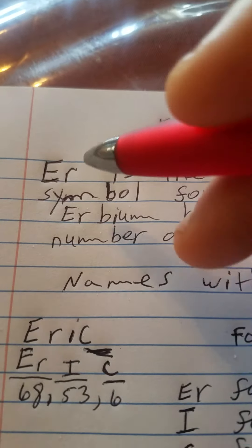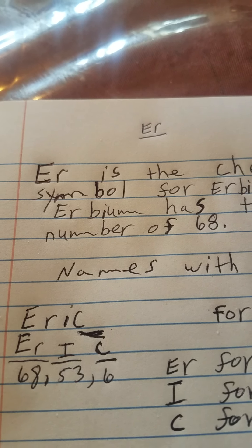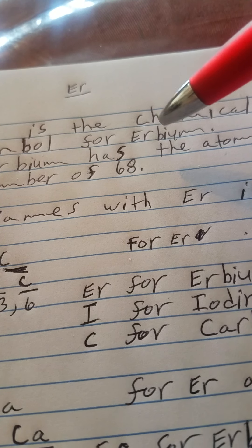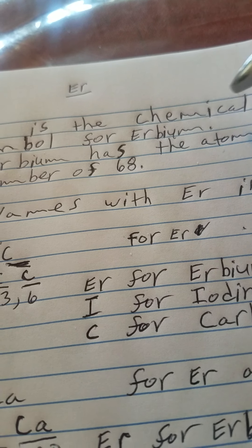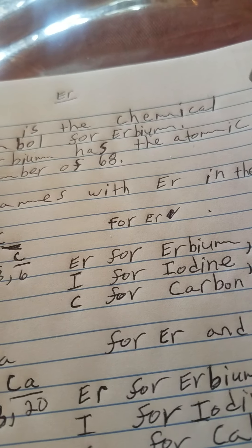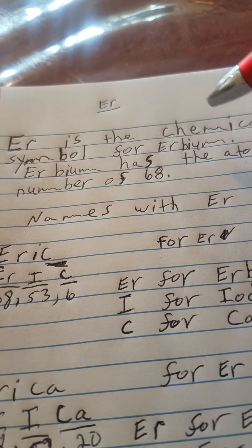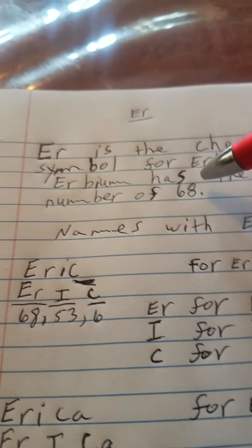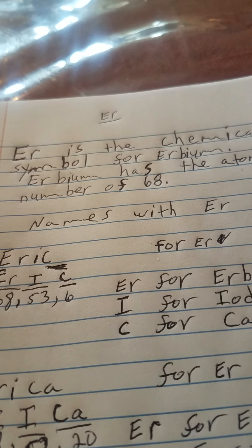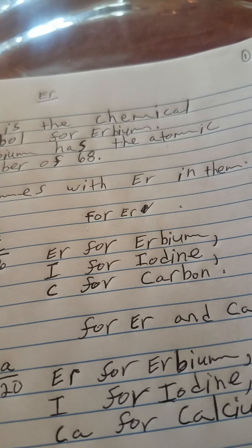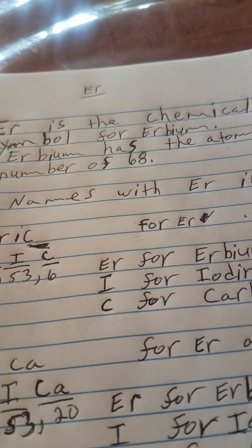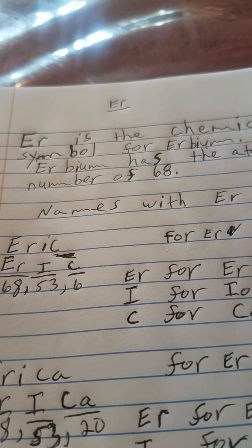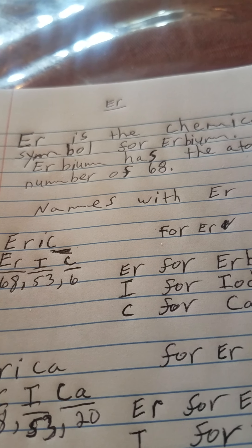Let's start with ER. Capital E and a small r is the chemical symbol for erbium. Erbium is spelled capital E-R-B-I-U-M, and it has the atomic number of 68.